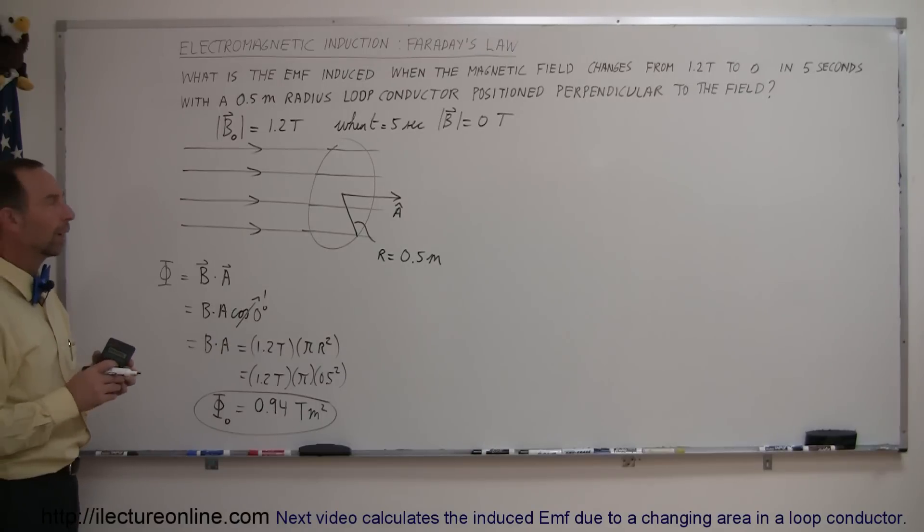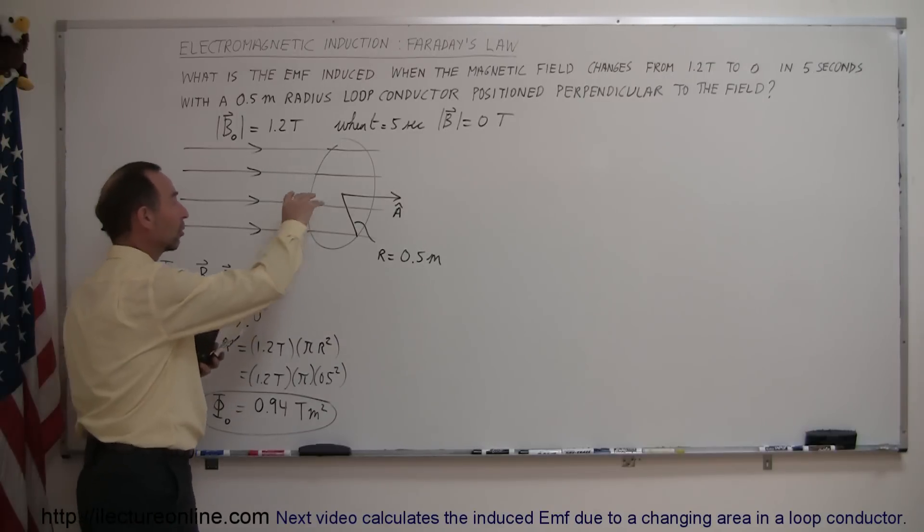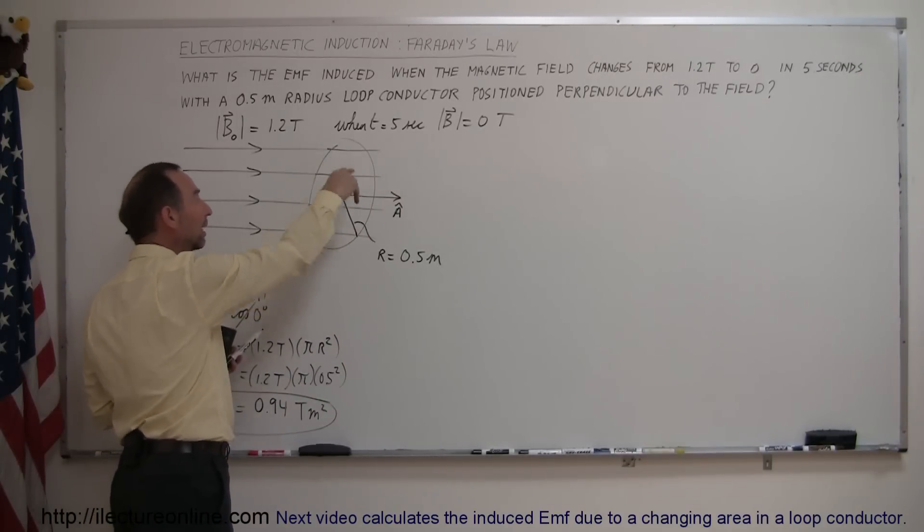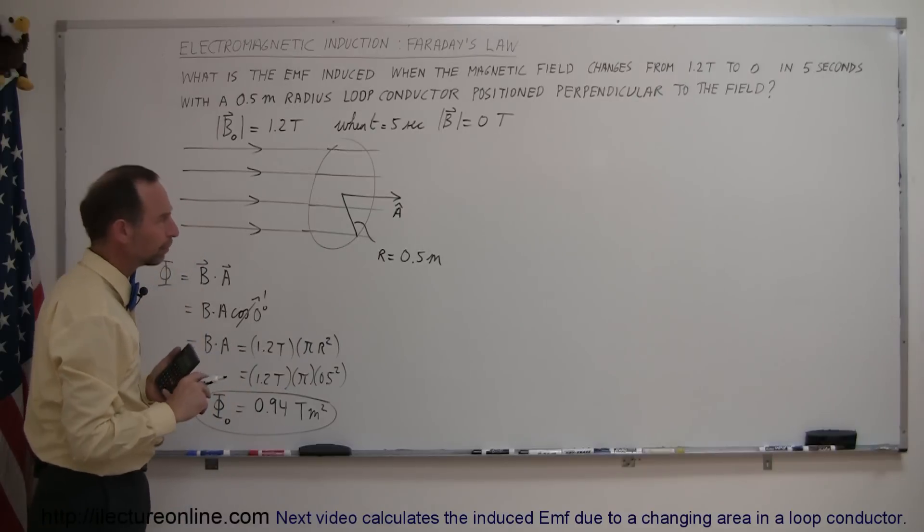and then in five seconds it goes from that amount to zero. What does that do? Well, it actually creates what we call an EMF, it actually creates a potential difference across the loop, so that current will begin to flow through the loop.